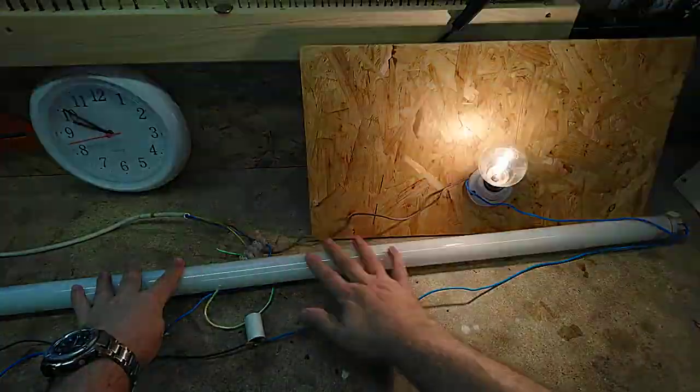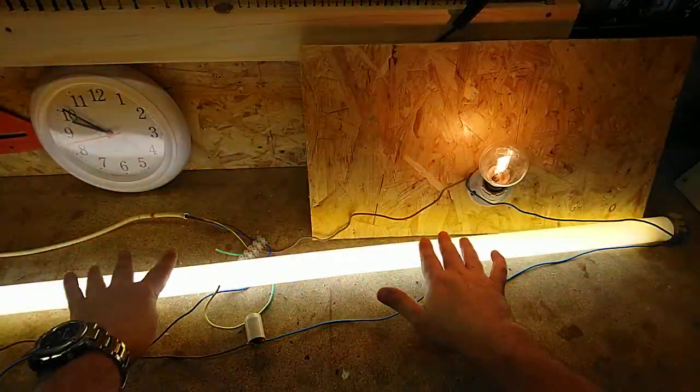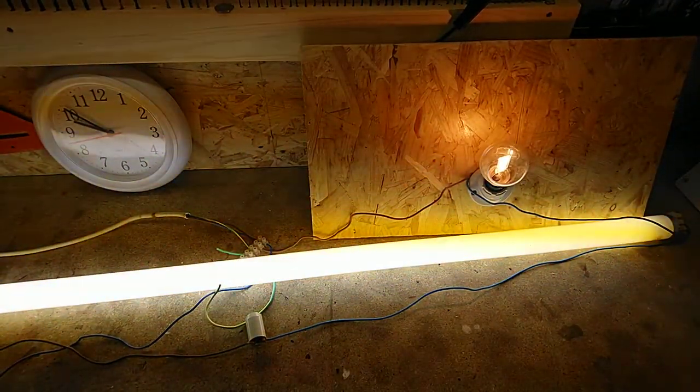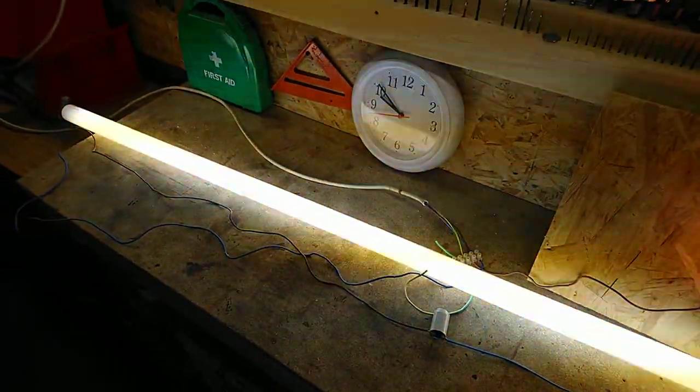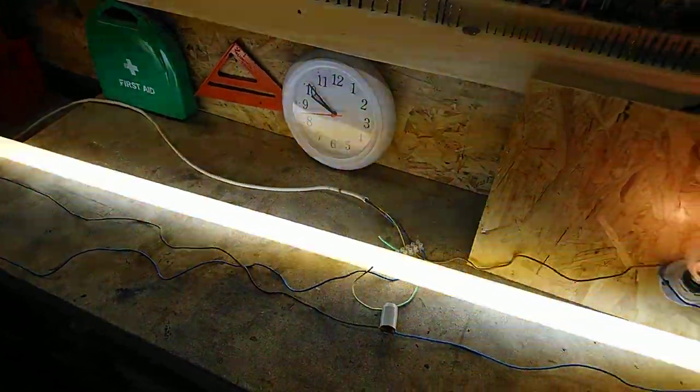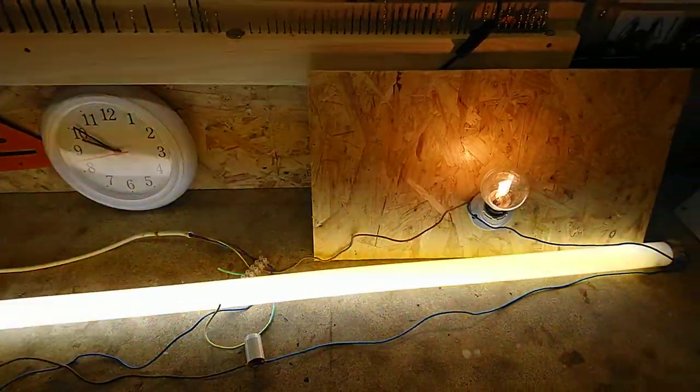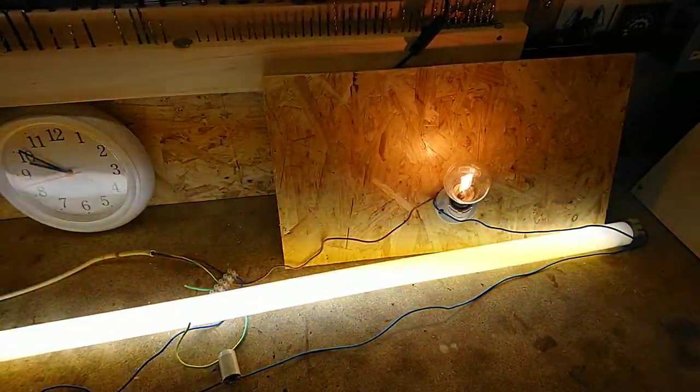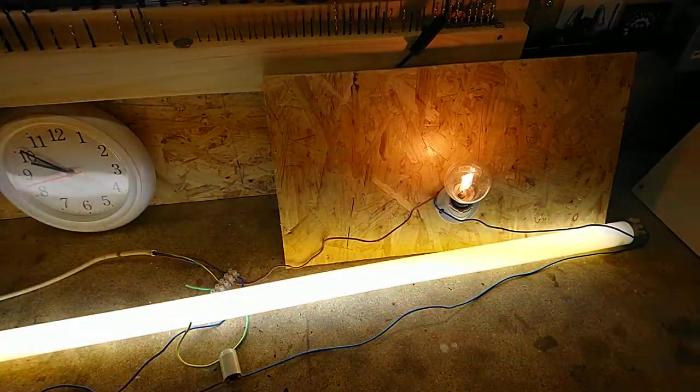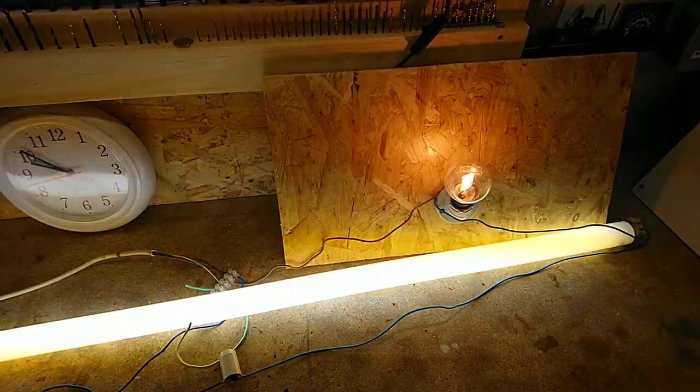There we go, and that is it. Now I think I'm under-running this tube because it is quite dim. It is an 80-watt fluorescent tube and I'm only using a 100-watt halogen light to actually ballast the light.